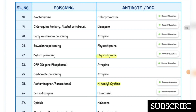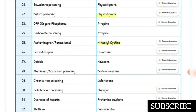Amphetamine poisoning — antidote is chlorpromazine. Chloroquine toxicity — antidote is diazepam. Early mushroom poisoning — antidote is atropine. Belladonna poisoning — antidote is physostigmine. Datura poisoning — antidote is physostigmine.